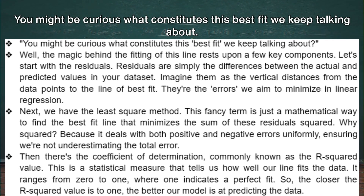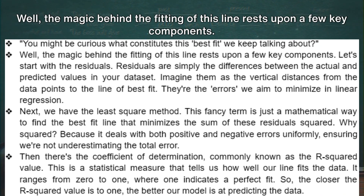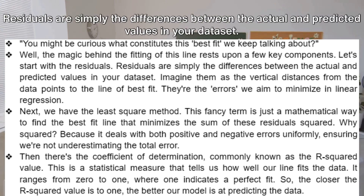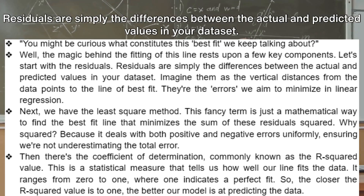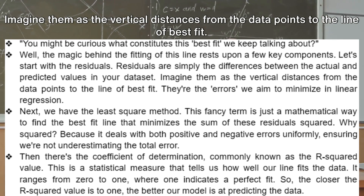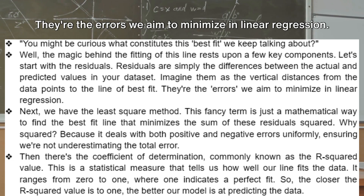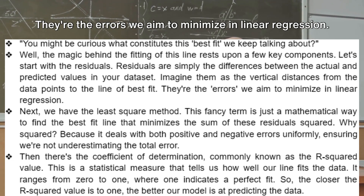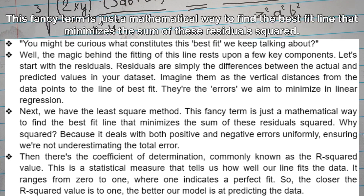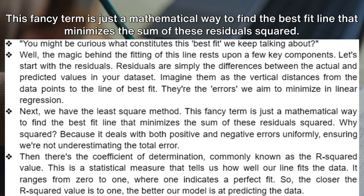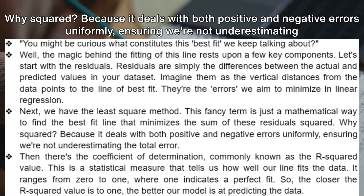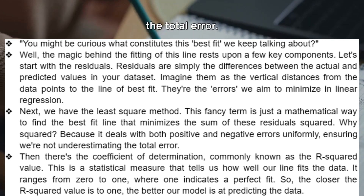What constitutes this best fit? The magic rests upon a few key components. First, residuals — the differences between the actual and predicted values in your dataset, visualized as the vertical distances from the data points to the line of best fit. These are the errors we aim to minimize. Next, the least squares method: a mathematical approach to find the best-fit line that minimizes the sum of these residuals squared. Squaring handles both positive and negative errors uniformly, ensuring we don't underestimate the total error.